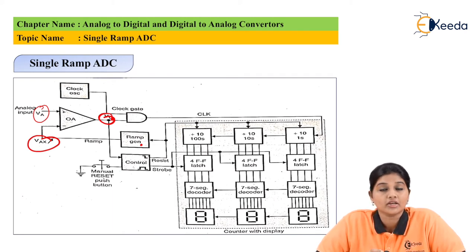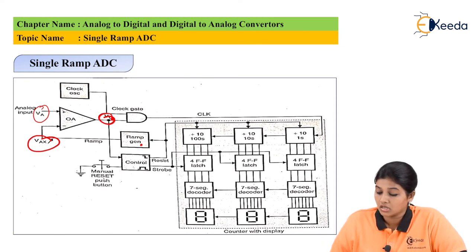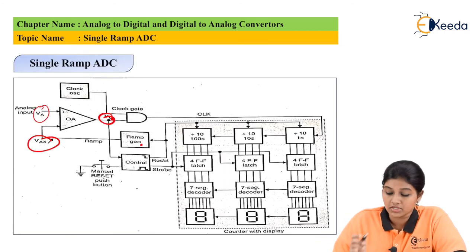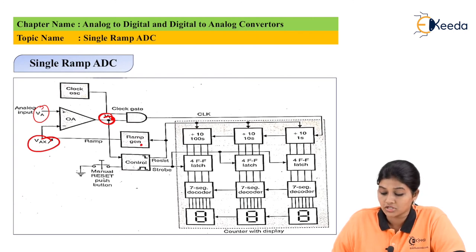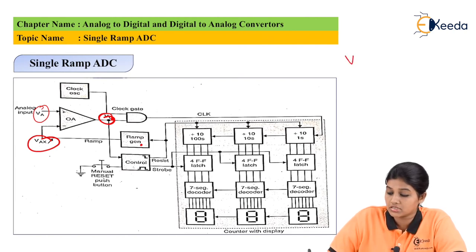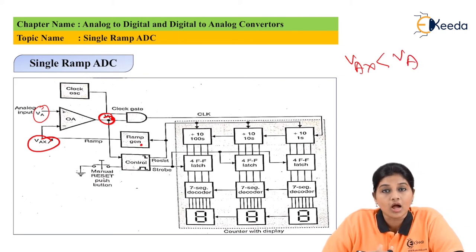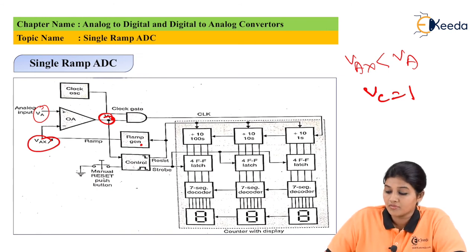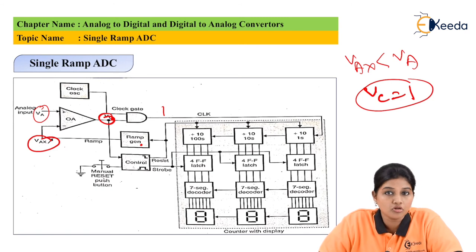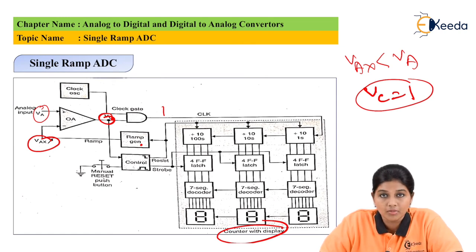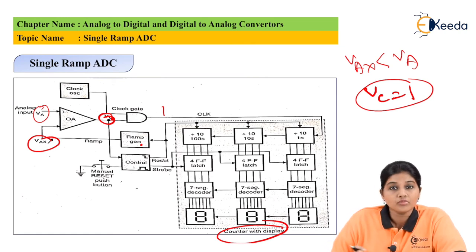In the single ramp ADC, the time required for the reference voltage to increase to the value of the unknown voltage is directly proportional to the magnitude of the unknown voltage, and it is measured using the counter with display. On manual reset, the ramp generator and counter are reset. Since the ramp output VAX is less than VA, the comparator output VC goes high. This enables the AND gate, which passes the clock signal to the counter, and the counter starts counting up linearly.